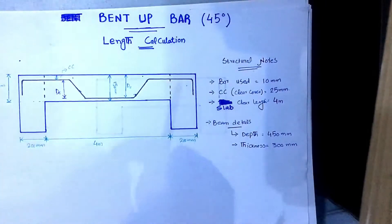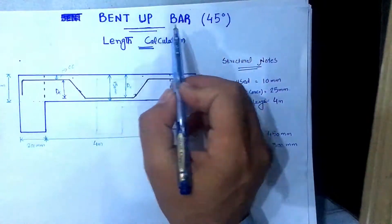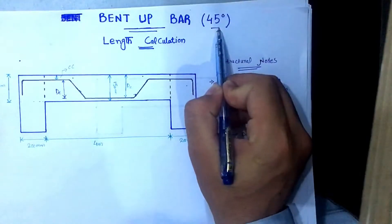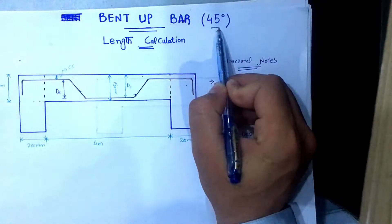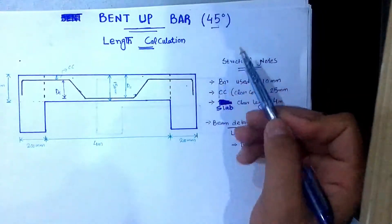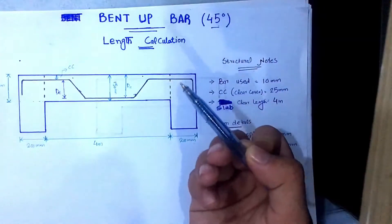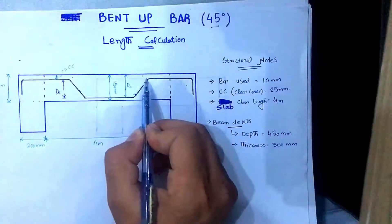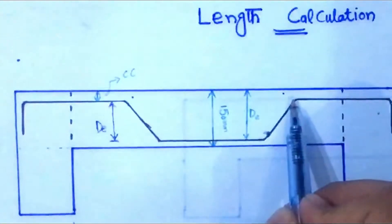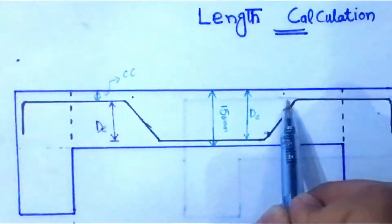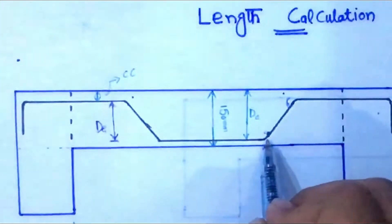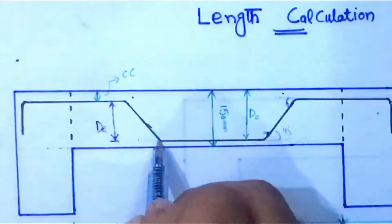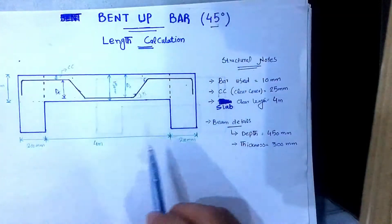I am using a formula for the bent up bar method, which is bent at 45 degrees. All the bends used in this bar are at 45 degrees. If you look at this bar, this angle is 45 degrees, this angle is 45 degrees, and these other angles are also 45 degrees. So the formula I am going to use is for a 45-degree angle.